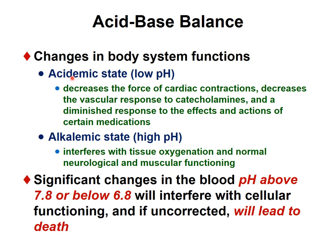When we have an alteration of acid-base balance, in an acidemic state — low pH — the contractile function of cardiac muscle decreases, along with vascular response to catecholamines and response to certain mediators. In an alkalemic state — high pH — tissue oxygenation is affected; it alters the oxygen dissociation curve of hemoglobin, can cause peripheral hypoxemia, and alters normal neurological and muscular function. Blood pH above 7.8 or below 6.8 interferes with cellular functioning and, if uncorrected, is lethal.